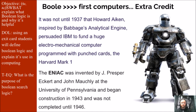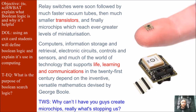On the right-hand side here I have a Mark I — in terms of Iron Man's first suit. Relay switches were soon followed by vacuum tubes, then smaller transistors, and finally microchips with ever greater levels of miniaturization. Computers, information storage and retrieval, electronic circuits, controls and sensors, and much of the world of technology that supports life, learning, and communications in the 21st century depend on the inventive, versatile mathematics devised by George Boole. We sort of owe it all to him.